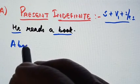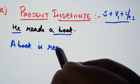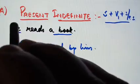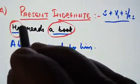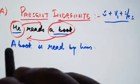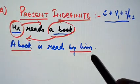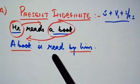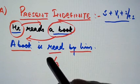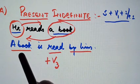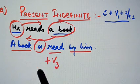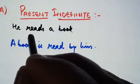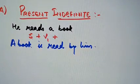The passive of 'He reads a book' will be formed by first interchanging the places of subject and object. A book will come at the beginning and 'he' will go to the end, changing into 'by him'. At the place of 'reads', according to the rule, the third form of the verb will be used, and before that we have to use 'is', 'was', or 'were' according to the subject. So here it will be 'is', giving us: 'A book is read by him.'